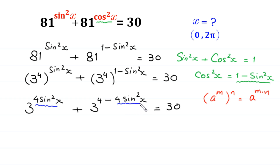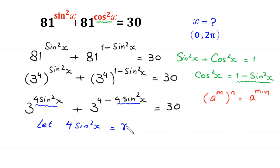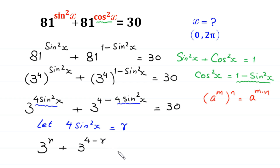Here we have 4·sin²x in both exponents, so we let r = 4·sin²x. Substituting r into the equation gives 3 to the power r plus 3 to the power (4 - r) is equal to 30.